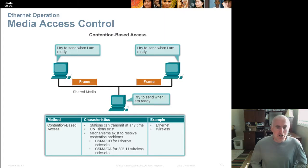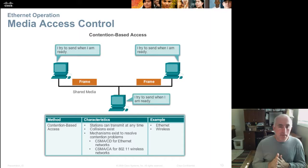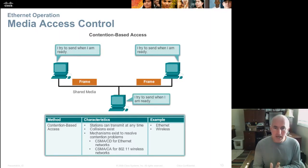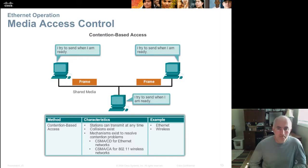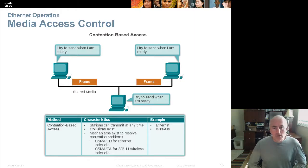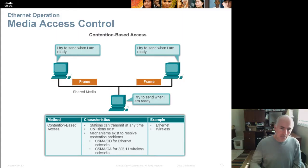We have two flavors of CSMA. CSMA/CD is used on wired Ethernet networks — fiber optic and copper — and uses collision detection, meaning the machine listens to the wire as it's sending bits. If it hears someone else speaking, it knows there's been a collision and goes into a back-off algorithm to determine when to try again. CSMA/CA stands for collision avoidance and is used on wireless networks.